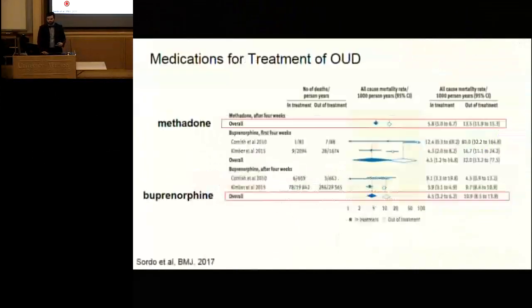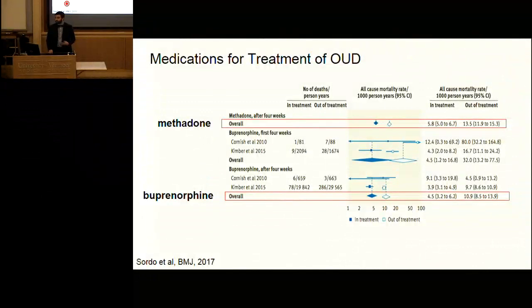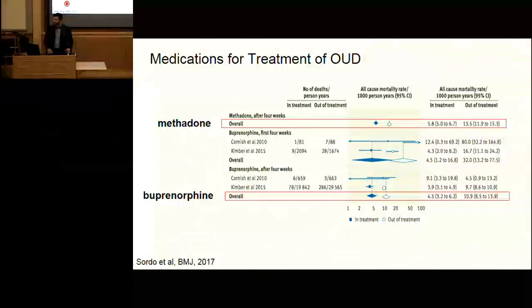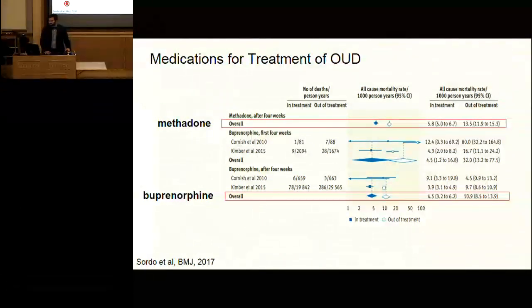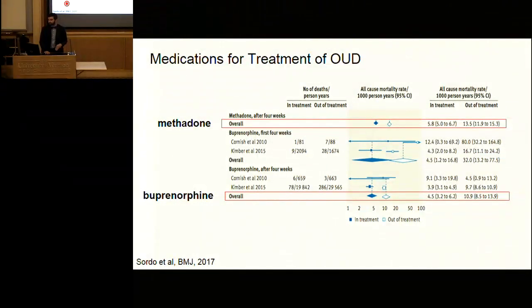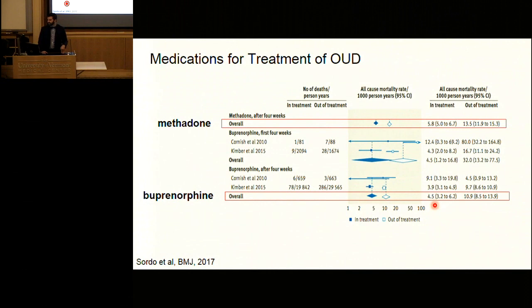Medications for opioid use disorder — in particular methadone and buprenorphine — work. In the best meta-analysis, methadone reduced all-cause mortality from 13.5 to 5.8 deaths per 1,000 person-years, and buprenorphine reduced deaths from 10.9 to 4.5 per 1,000 person-years — representing 50–60% reductions in all-cause mortality. However, much less is known about whether these medications improve care for serious bacterial infections in people with opioid use disorder.